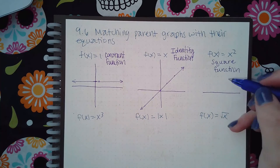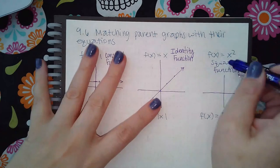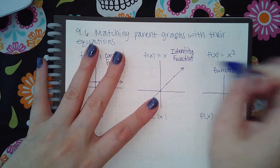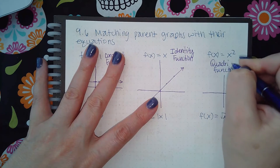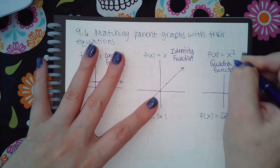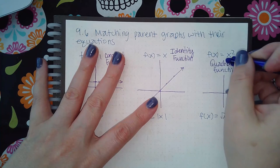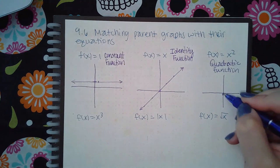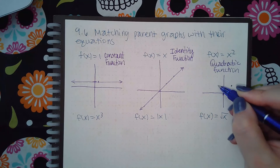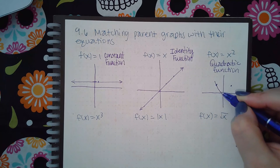And then here you've got a square function. I don't think they call it square function. We know these as quadratic functions. So x squared will be quadratic that looks like a U shape.